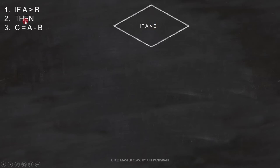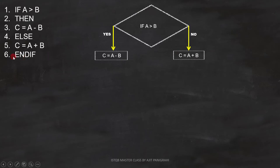Second and third line is, then C equals to A minus B. This will execute when a condition becomes true, so it will be placed like this in flowchart. Now let's see line number 4 and 5, else C equals to A plus B. This statement will be executed when condition in line number 1 fails, so it will be placed like this in the flowchart.